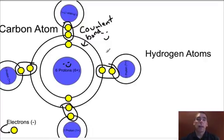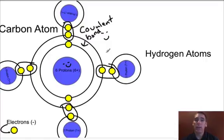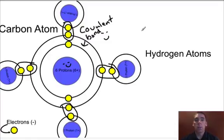Now what you'll find in many cases where you have a covalent bond is that sometimes they don't share equally. Water is an example of that — the two H's and the O in H2O are not shared equally. But it still solves the problem; it's a best-case scenario. And so what we've done is formed a compound — a covalently bonded compound.